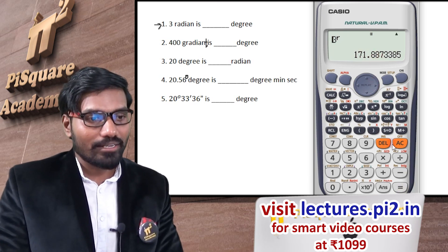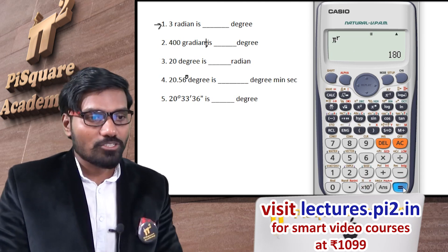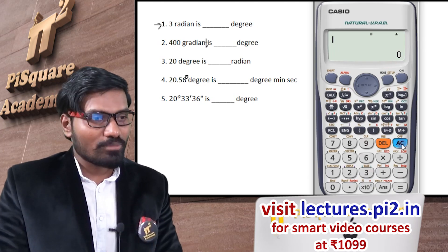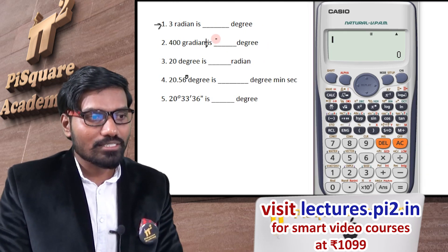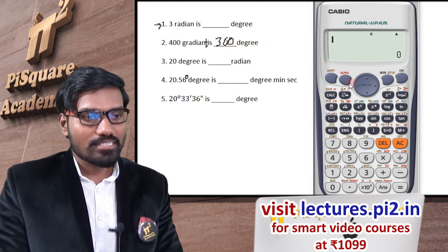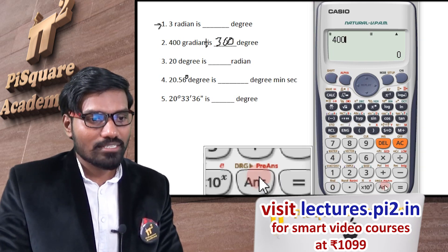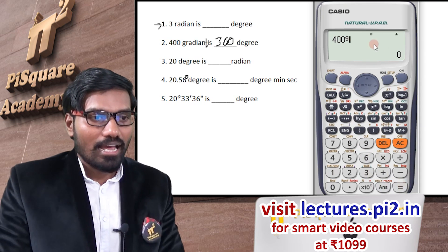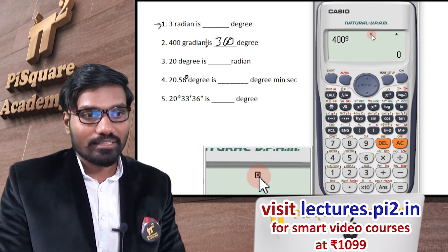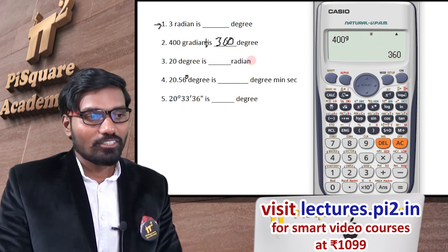Similarly, if you want to convert π radians, the result should be 180 degrees — and indeed you get 180. Now for 400 gradient: enter 400, then press Shift and the DRG button again, and choose gradient — option 3. Since the calculator is in degrees mode, the result is displayed in degrees: 400 gradient equals 360 degrees.